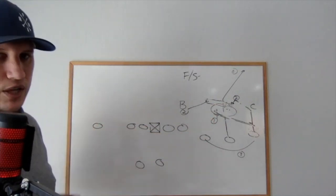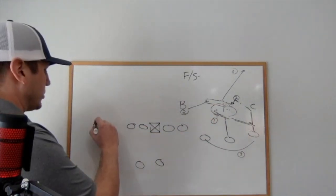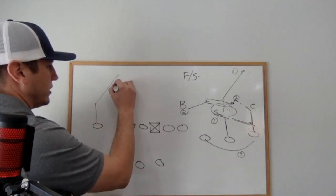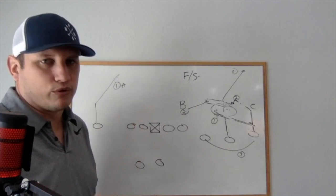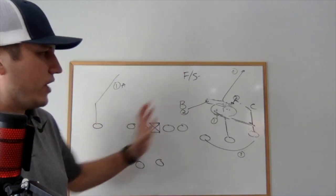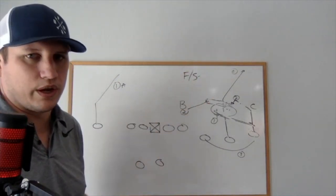On the backside for us, we just run a five-step glance. So we'll put him on a backside post and this is an alert for us. So pre-snap for whatever reason, if we like it, we throw it. If not, we work to our progression there.